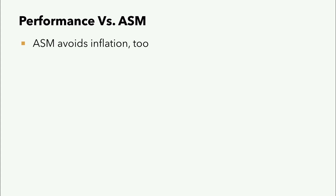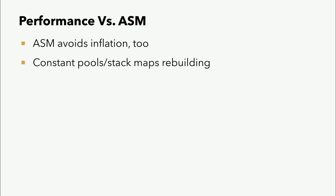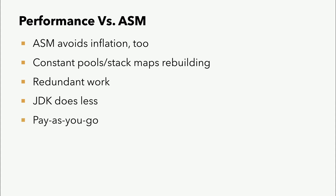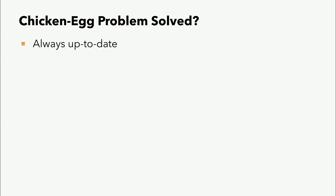Aber schauen wir nochmal zu ASM, weil letztendlich das war ja der Vergleich, mit dem ich angefangen habe: warum nehmen wir nicht ASM? ASM versucht auch, so gut es geht, zu verhindern, Dinge zu Objekten umzuwandeln. Aber trotzdem wird im Vergleich zur neuen API viel mehr geparst, um ein Verständnis vom Classfile zu bekommen. Constant-Pools und Stack-Maps werden öfters neu gebaut im Vergleich zur neuen API. Es passiert einfach zu viel redundante Arbeit. Viele Objekte werden inflated, die man vielleicht gar nicht braucht. Manche Ops sind schneller in ASM als in der neuen API. Aber das JDK hat den Vorteil, es macht einfach weniger. Und dadurch erreicht es seine Performance. Im Großen und Ganzen ist die API pay-as-you-go: du benutzt was nicht, du bezahlst nicht dafür.